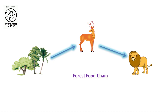Moving forward, have a look at this illustration — we can see a forest ecosystem, a land full of plants. Here comes the deer, now feeding upon the lush green plants. Now the lion enters, the king of the jungle, and has grabbed the deer and finishes his meal. This completes a food chain.